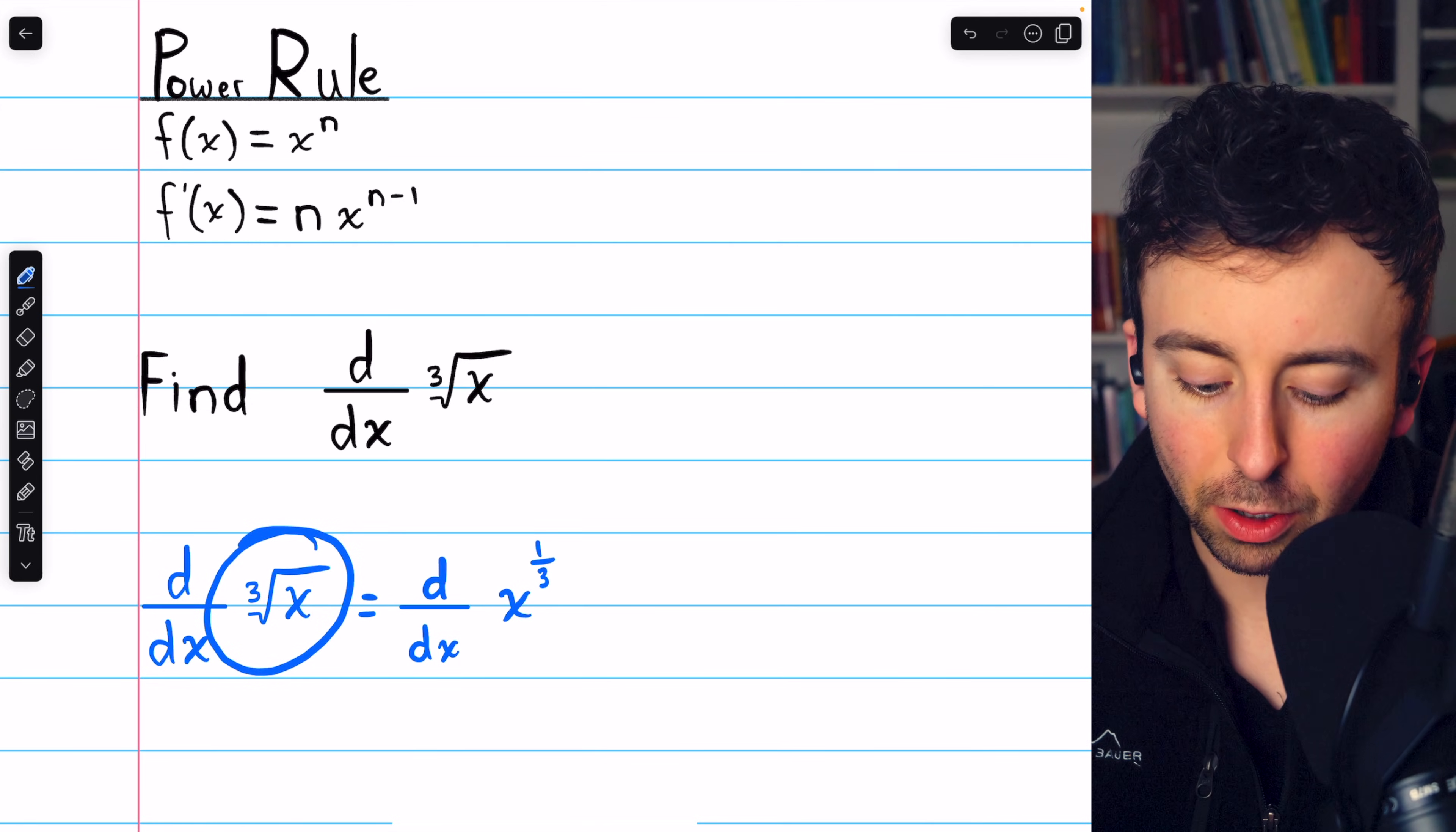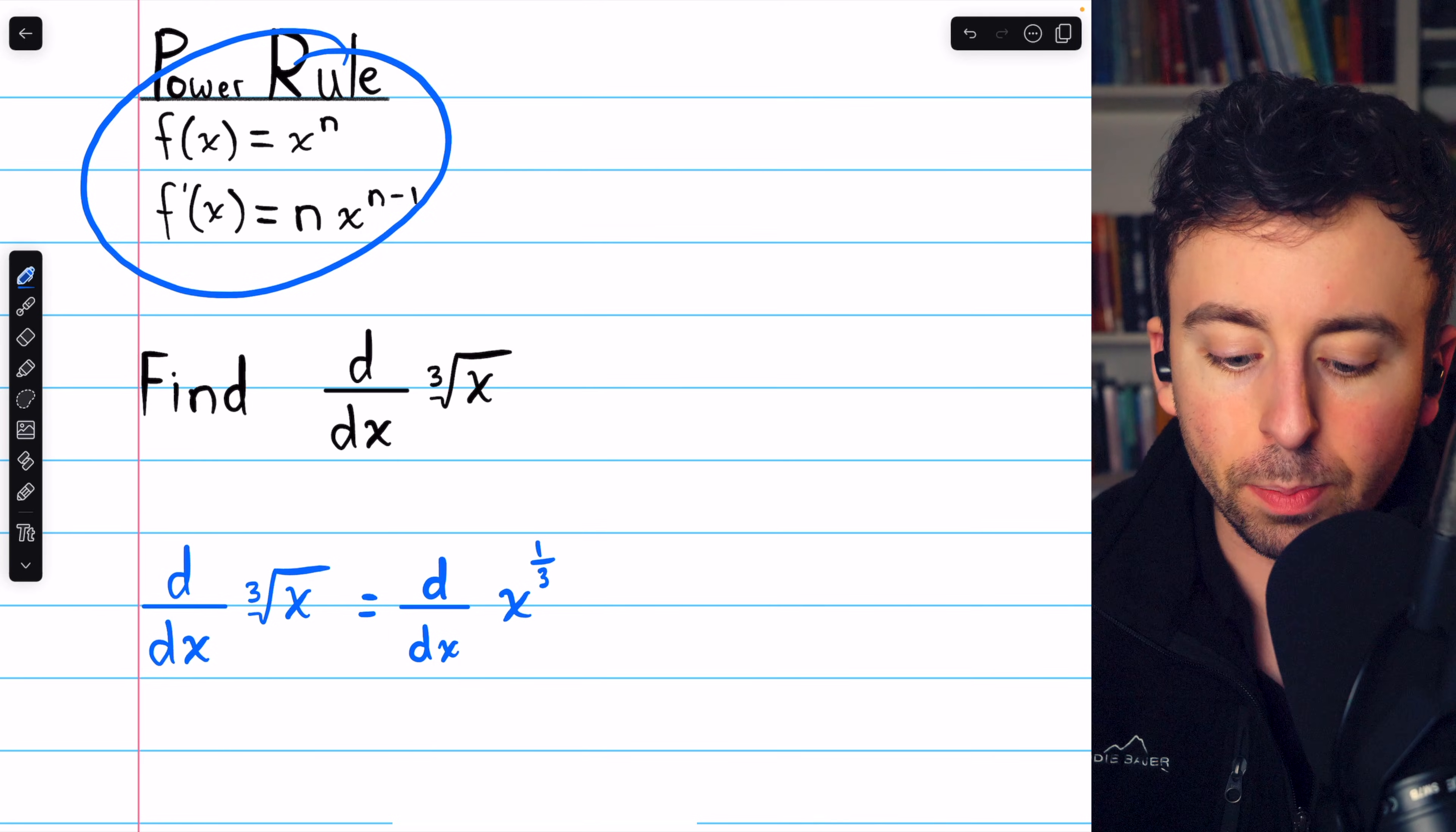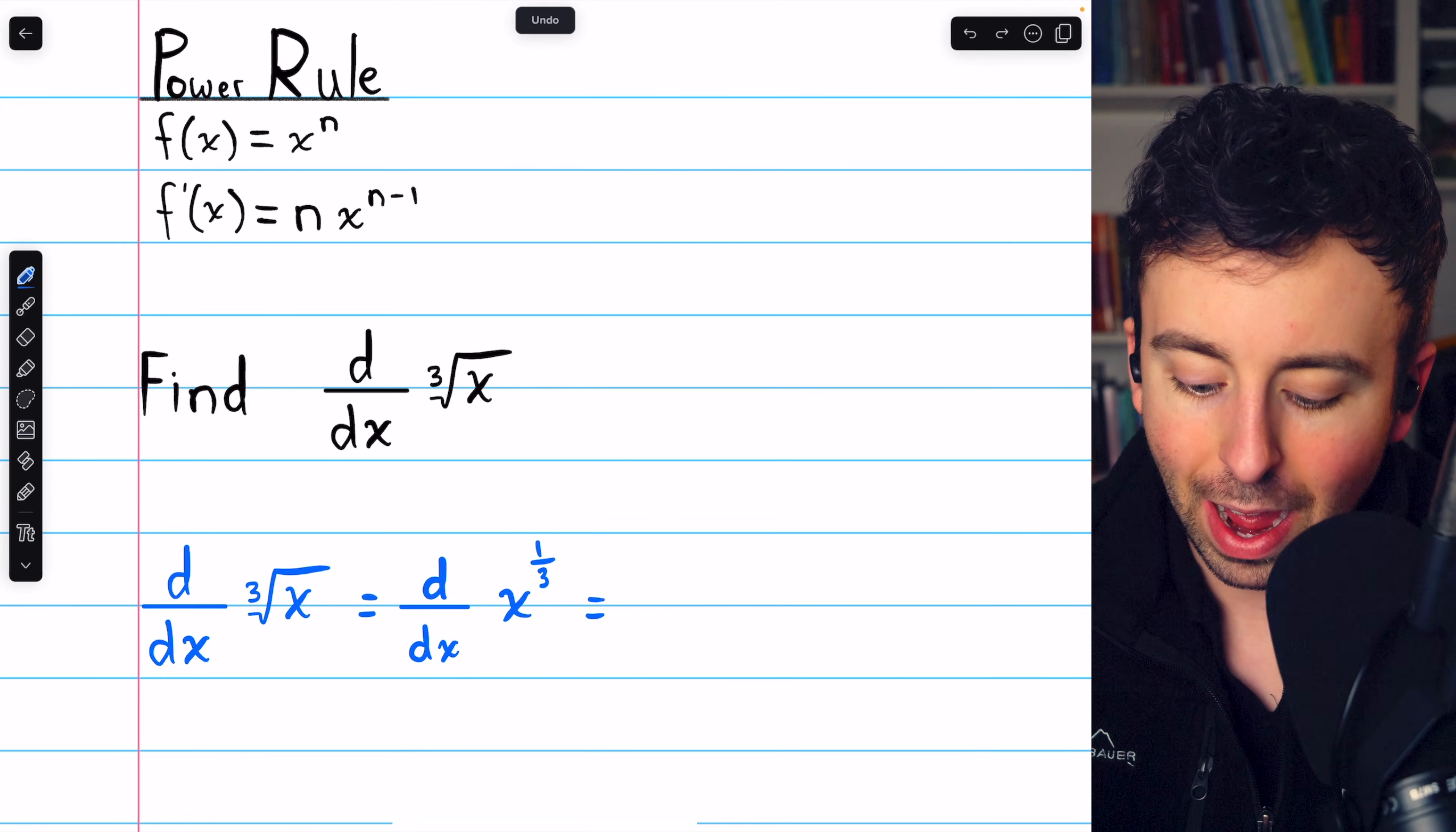Once we rewrite this radical as a rational power, we can apply the power rule, which tells us to take the derivative, we must bring the exponent down in front as a factor,